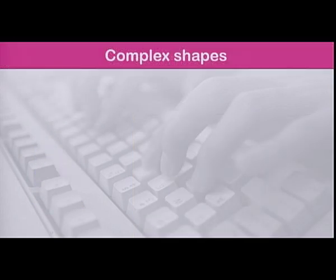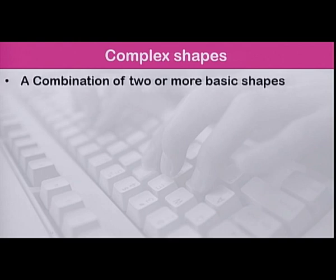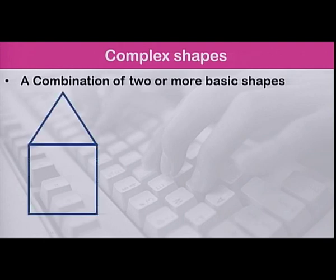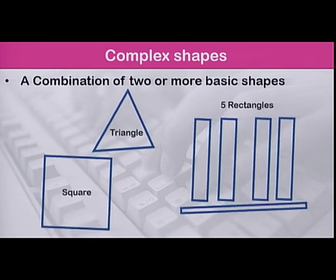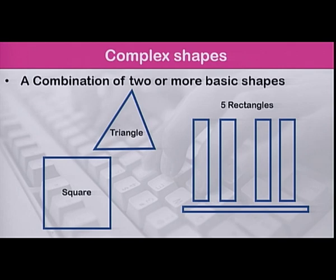Now you know what a simple shape is and how to draw basic or simple shapes in Logo. Let us see what a complex shape is. A complex shape is a combination of two or more basic shapes. The first example is a combination of a triangle and a square, while the second one can be broken down into five rectangles.